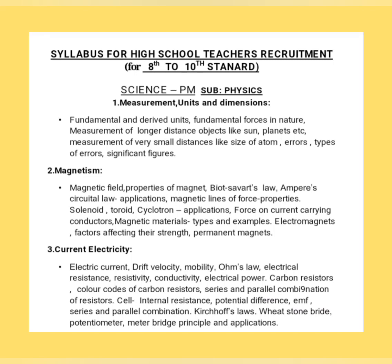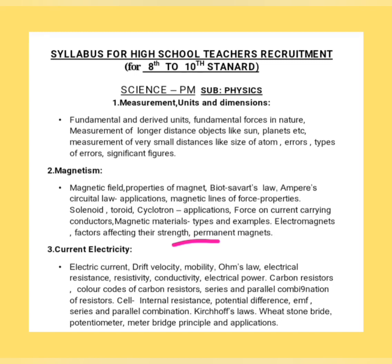Moving to magnetism: magnetic field, properties of magnets, Biot-Savart law, Ampere's circuit law and its applications, magnetic field lines, properties of solenoid and toroid, cyclotron and its applications, force on a current-carrying conductor, magnetic materials — types and examples — electromagnets, factors affecting strength, and permanent magnets.